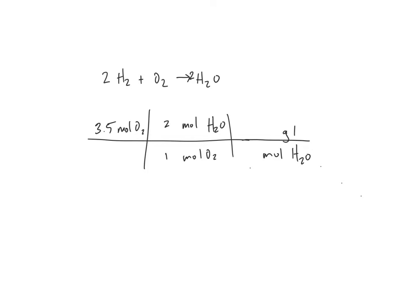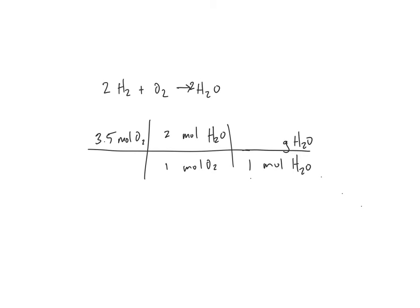Now I go from moles of water to grams of water. This is my molar mass conversion, so one mole of water is equal to 18.015 grams of water because there are two hydrogens and one oxygen. So when you add those together you get 18.015.